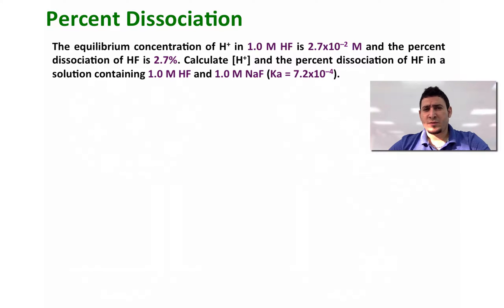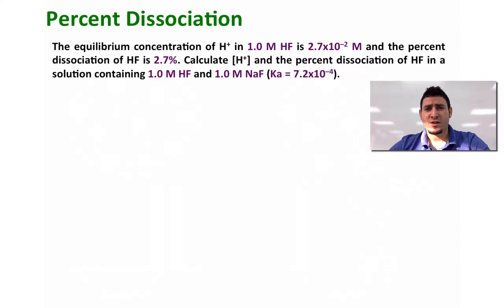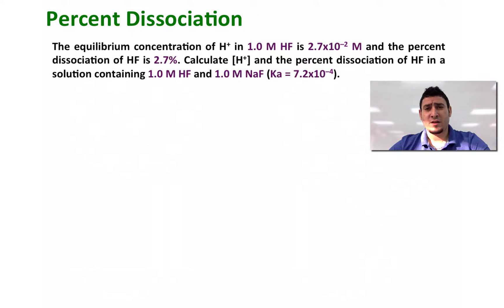Now let's discuss the following example: the equilibrium concentration of H plus in a 1 molar solution of HF is 2.7 times 10 to the power minus 2 molar, and the percent dissociation of HF is 2.7 percent. We want to calculate the concentration of H plus and the percent dissociation of HF in a solution that contains 1.0 molar HF and 1.0 molar sodium fluoride, where the Ka of HF is given. In this case we have added sodium fluoride, so we will have the common ion effect.